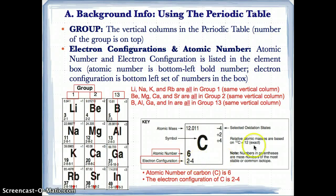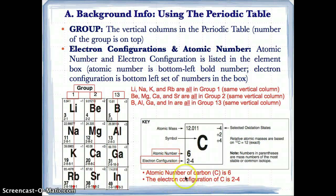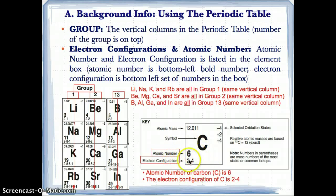If you ever forget where the atomic number and electron configurations are, you can always look on the periodic table key that shows you where they are. For example, the atomic number of carbon, C, is 6, while the electron configuration of C is 2-4, because the atomic number is the bottom left number 6 and the electron configuration is the bottom left set of numbers with dashes, which is 2-4.